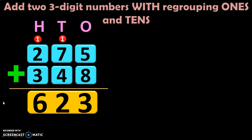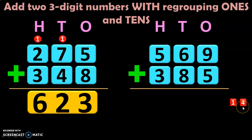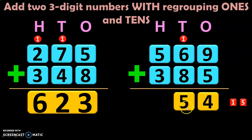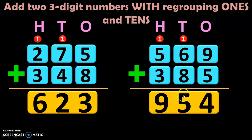Let us do another example: 569 plus 385. Write down the place values: ones, tens, and hundreds. Begin by adding the ones place: 9 plus 5 is 14, with 4 in the ones place and 1 in the tens place — that is 1 ten plus 4 ones. Retain 4 in the ones place and carry over 1 to the tens. Then 1 plus 6 is 7, and 7 plus 8 is 15. Retain 5 in the tens place and carry over 1 to the hundreds. Then 1 plus 5 is 6, and 6 plus 3 is 9. So, 569 plus 385 gives you the answer 954.